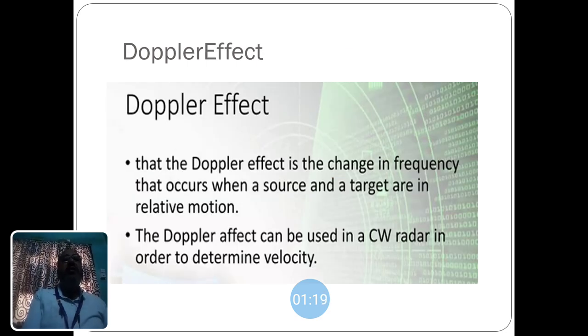It works under the Doppler effect. The Doppler effect is the change in frequency that occurs when a source and a target are in relative motion. The Doppler effect can be used in a CW radar in order to determine velocity.